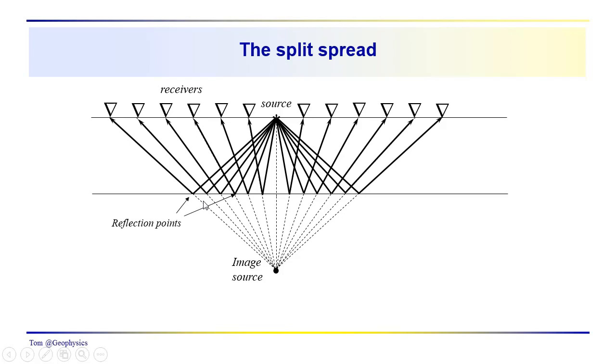Likewise, you can see that we are getting a limited range of depth point, reflection point coverage in this case, which would be equal to x over 2 on either side of the image point, or actual reflection point distribution here.